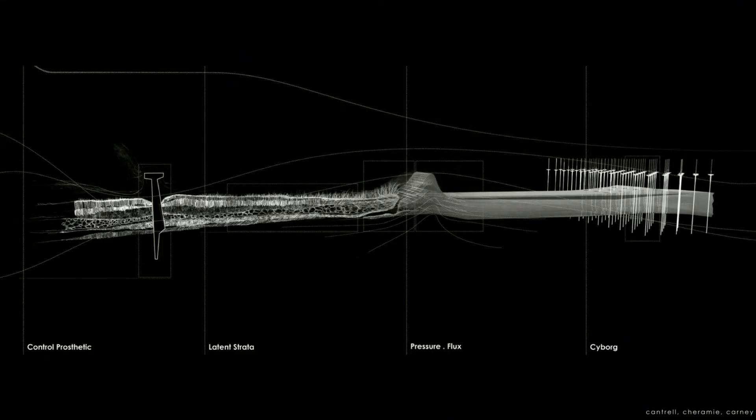We can think of our current methods of environmental construction as creating a prosthetic when a human being loses a limb. It looks like the previous limb, but the function is minimal. The ability to feel and react are missing, and possibly the fingers are stiff.